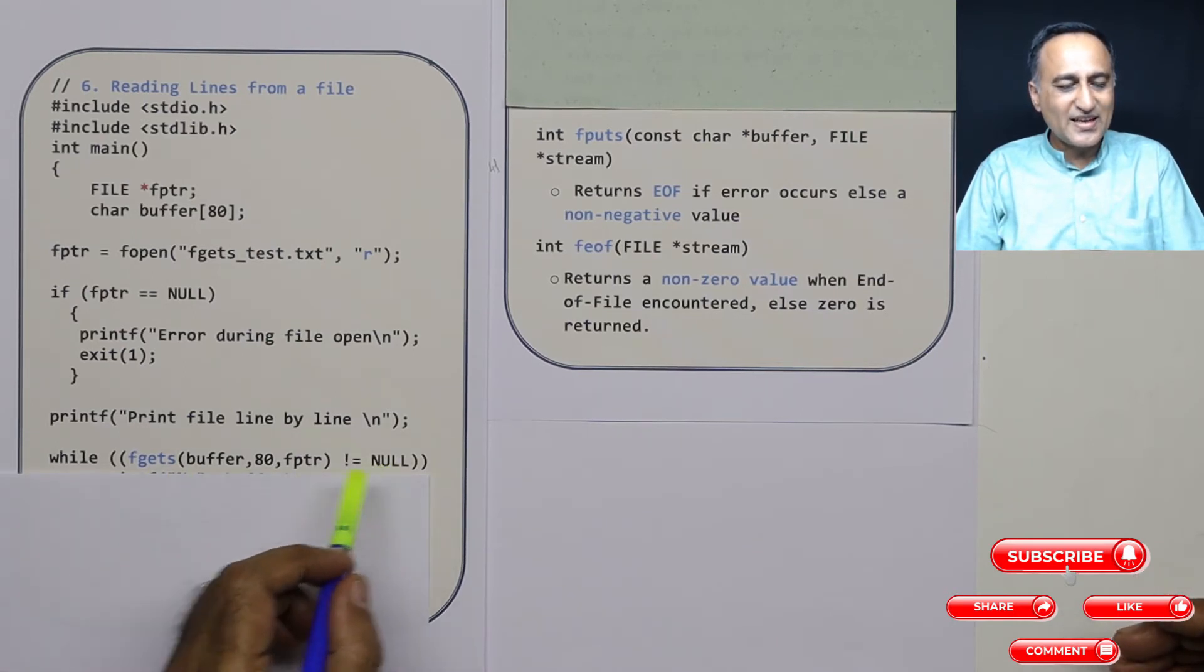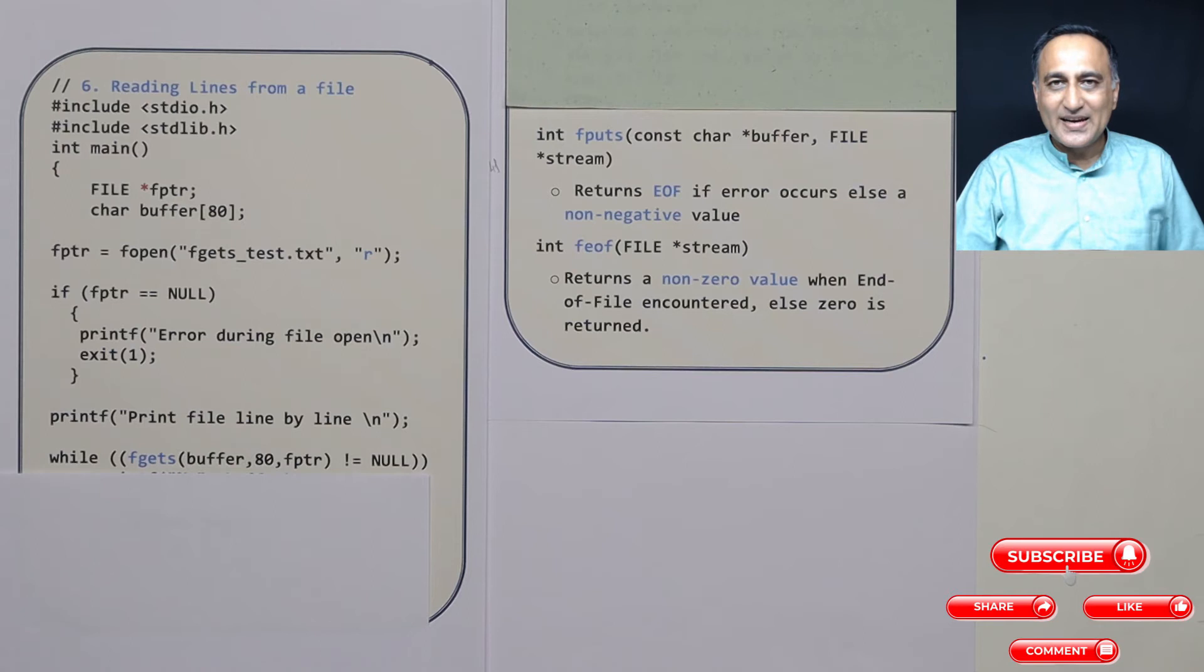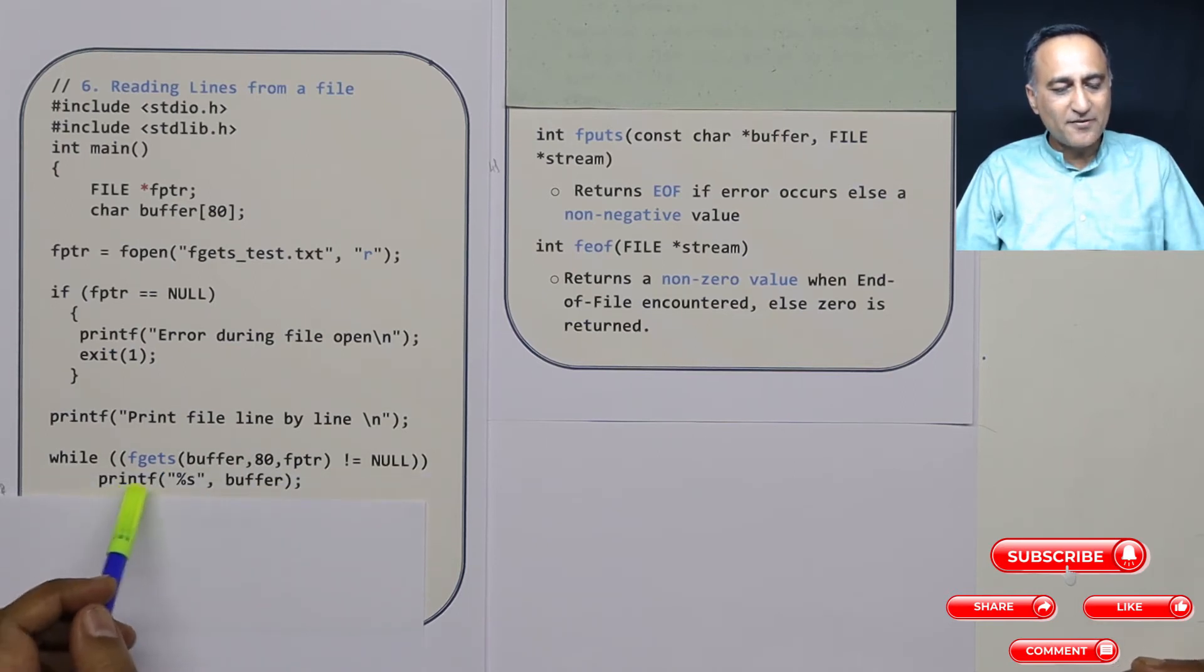So as long as it is not null, it will keep reading one line at a time. And then what it will do is using printf, we can print that particular line onto the screen.